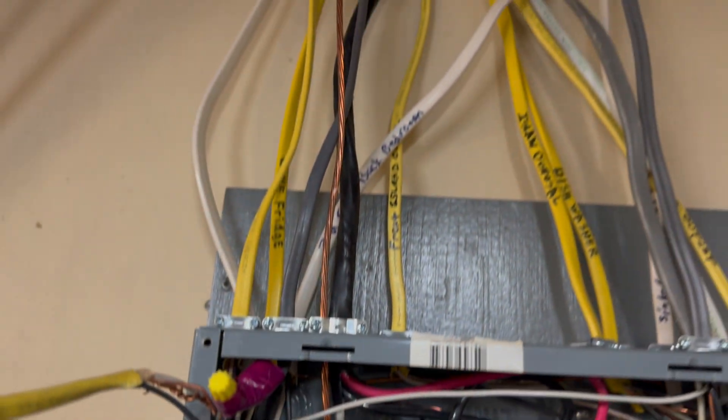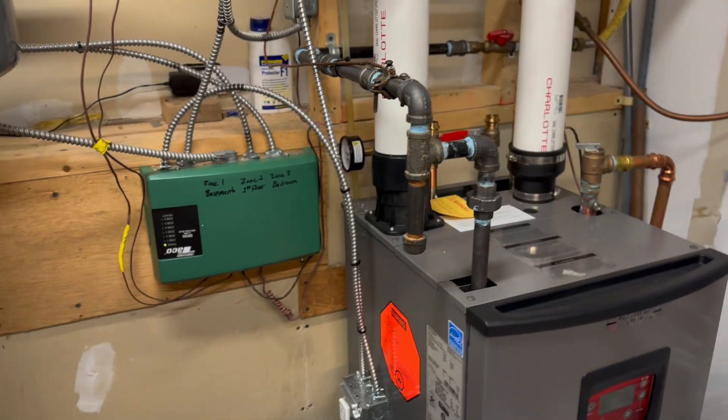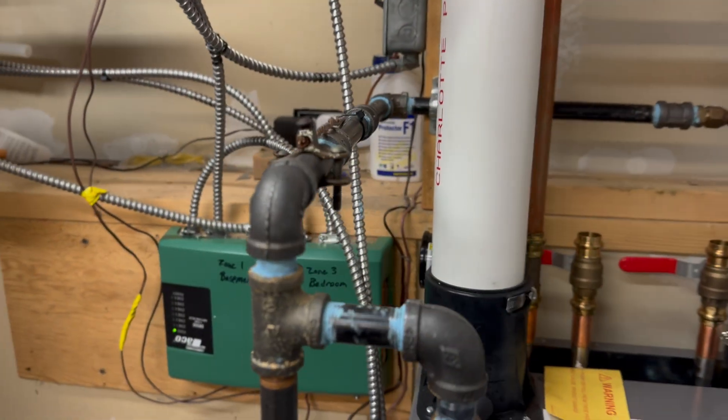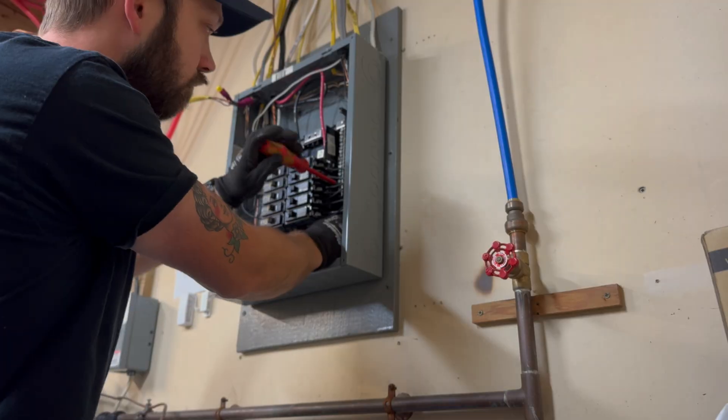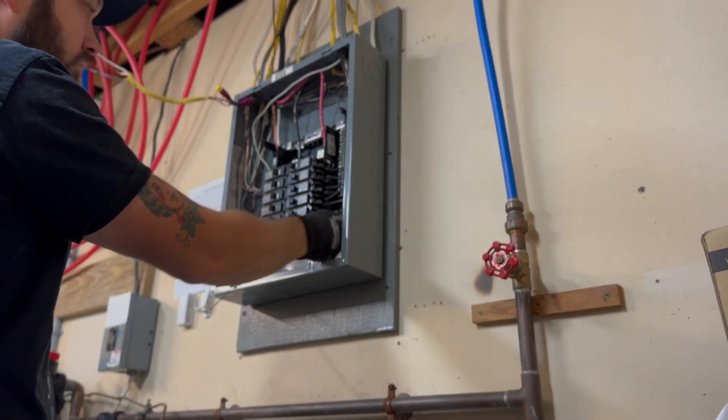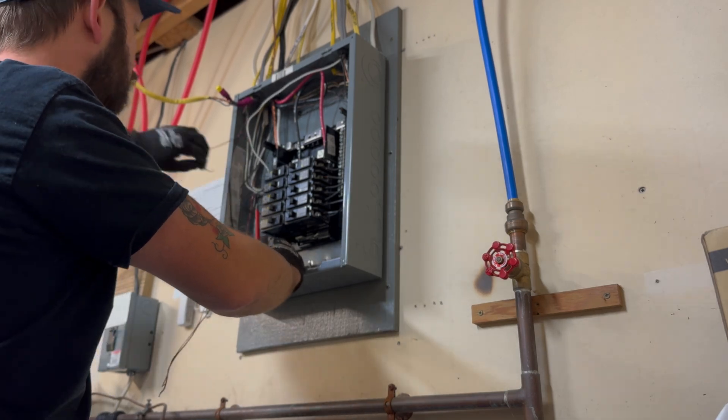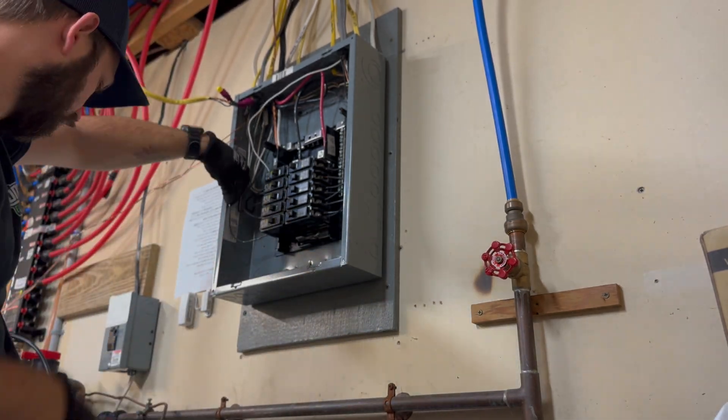And then here is a number six bare copper that's going over and bonding this gas furnace. Some CSST comes in and hits that furnace there, but that's just laying right on the neutral lug. Pretty big violation right there.